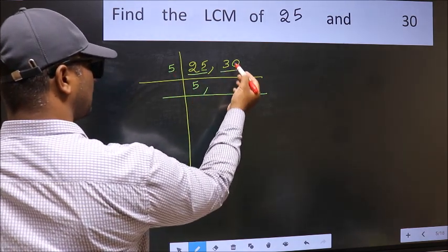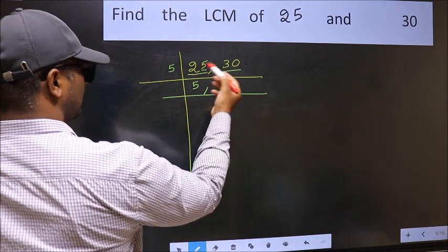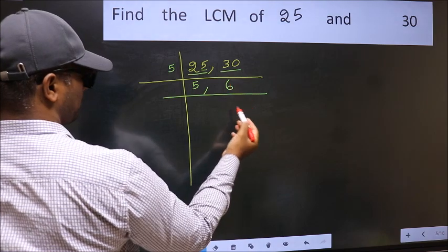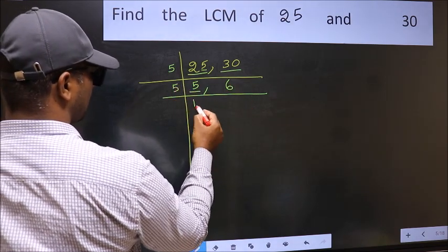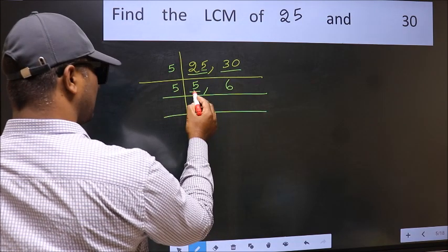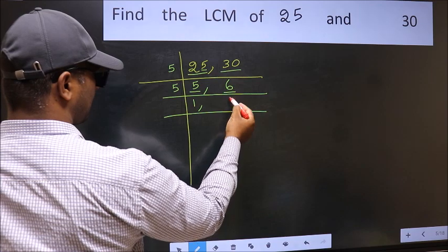The other number is 30. 30 is divisible by 5. When do we get 30 in the 5 table? 5 times 6 is 30. Now here we have 5. 5 is a prime number, so 5 divided by 1 is 5. The other number 6 is not divisible by 5, so you write it down as it is.